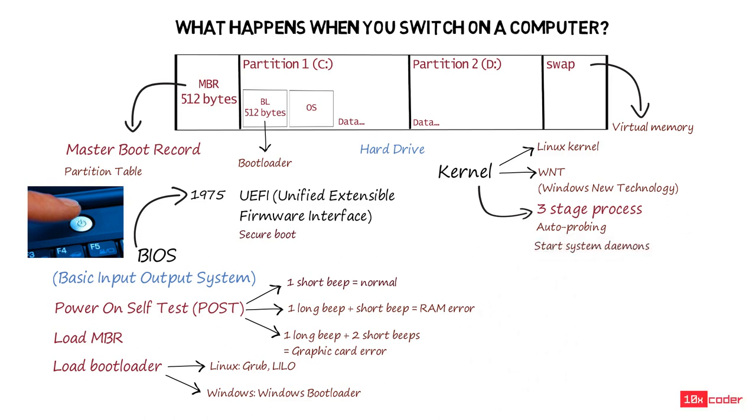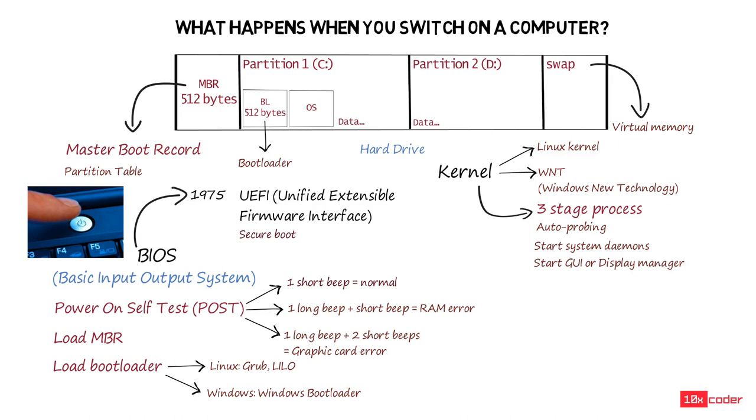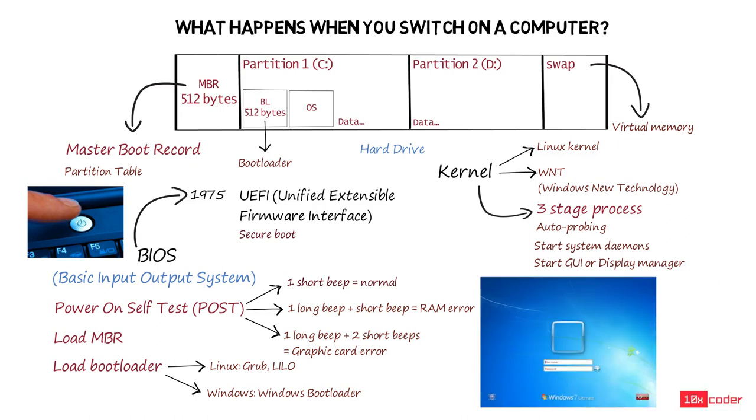in the second stage, the kernel will start the system daemons. Daemons are programs that run in the background and provide services to other programs. There are daemons for services such as printer spooling and networking. Once the daemons are running, the kernel will execute the GUI manager or the display manager that will give you a login screen.